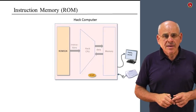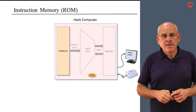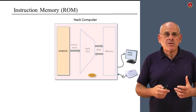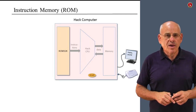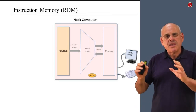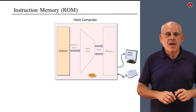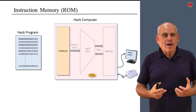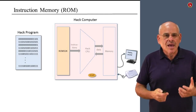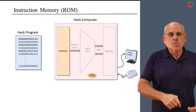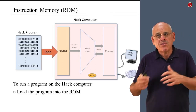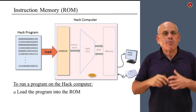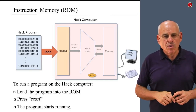The next thing to implement is the instruction memory, using a chip called ROM32K. Assume we have this computer on a table and a program written in Hack machine language next to it. To run the program, we load it into the computer — specifically into the ROM32K chip — press the reset button, and the program starts running. This is the abstraction we want to implement.